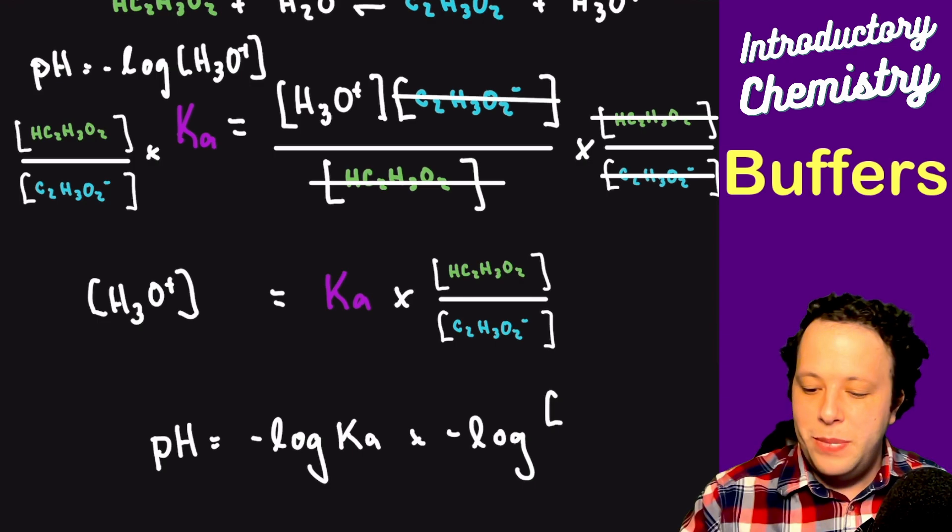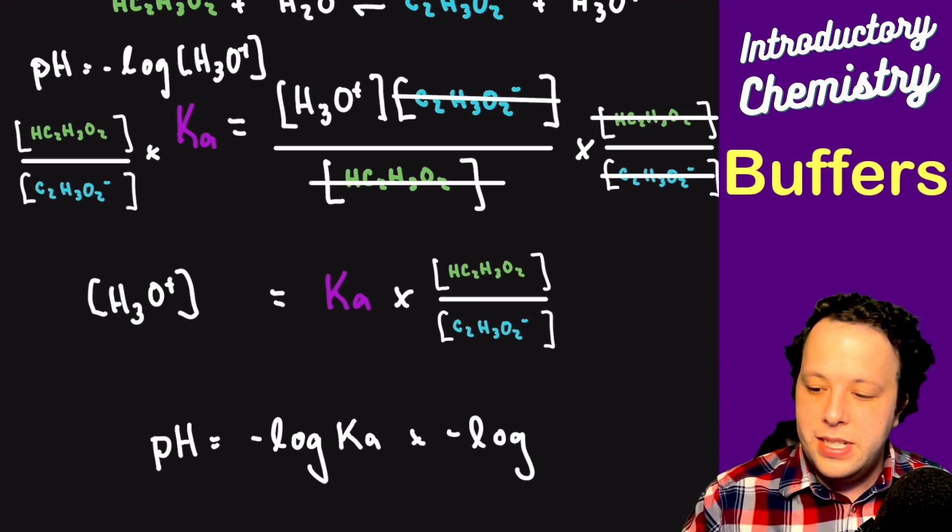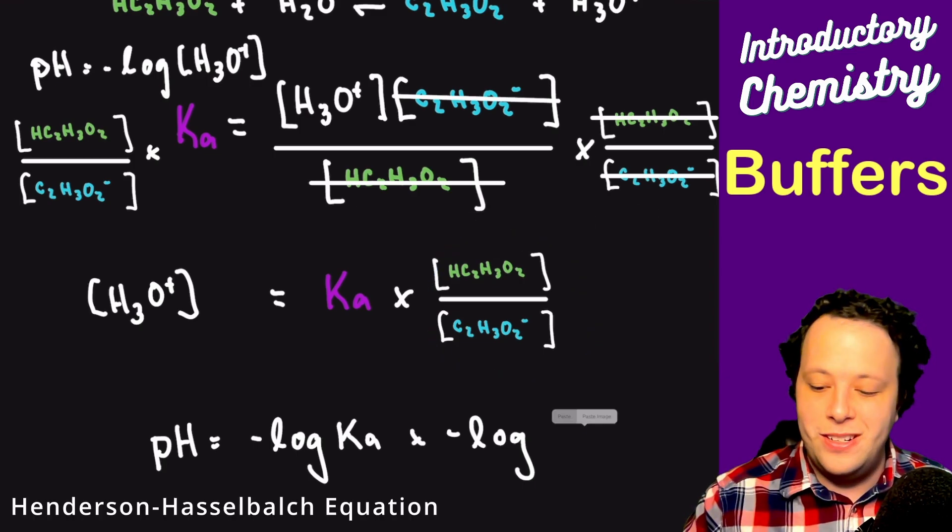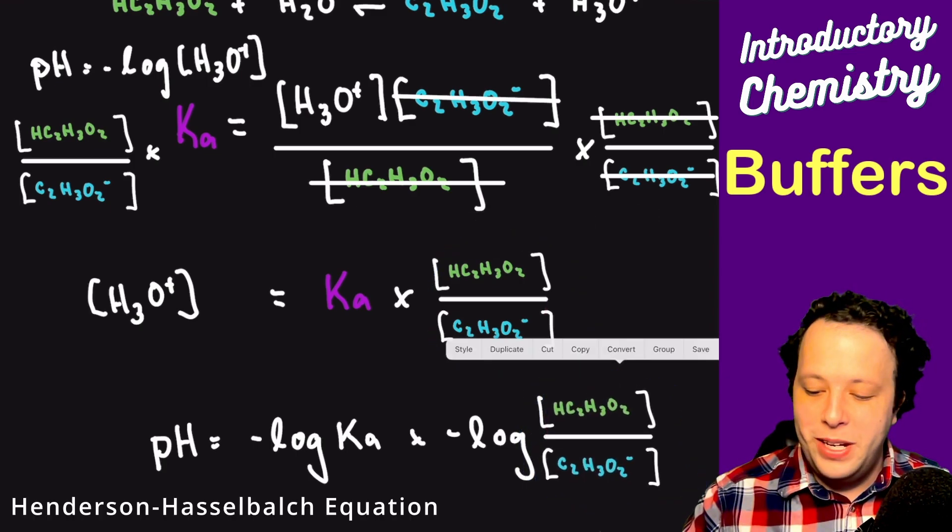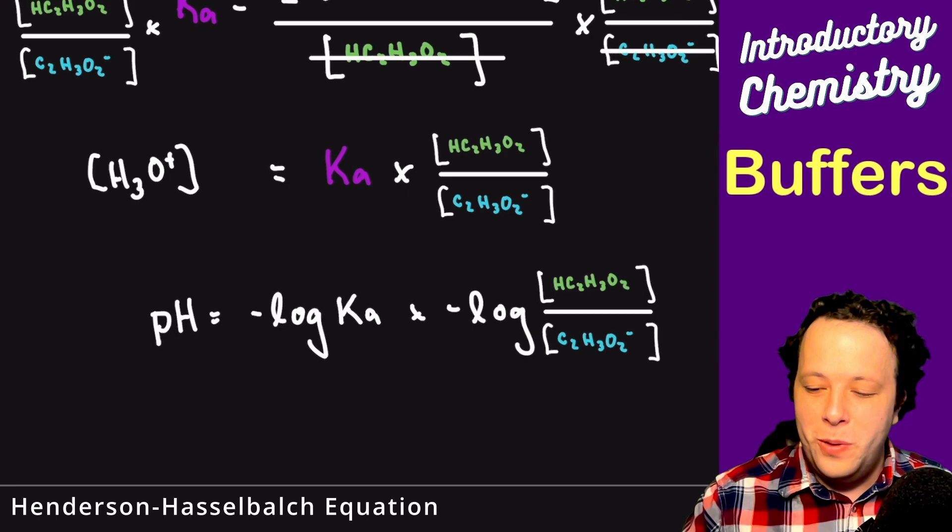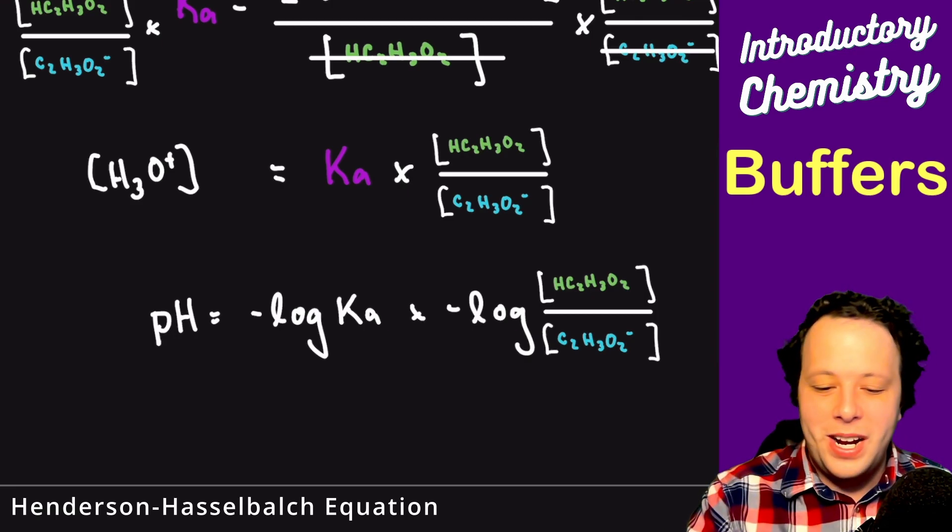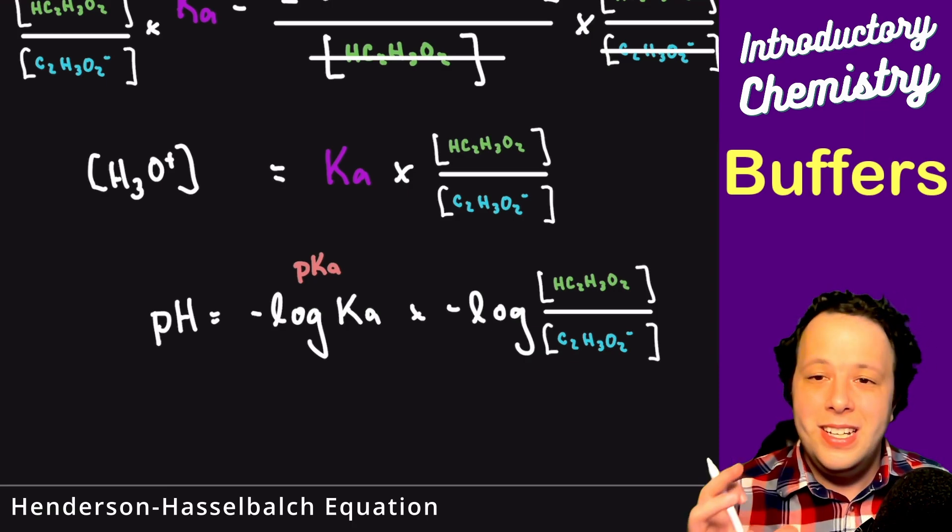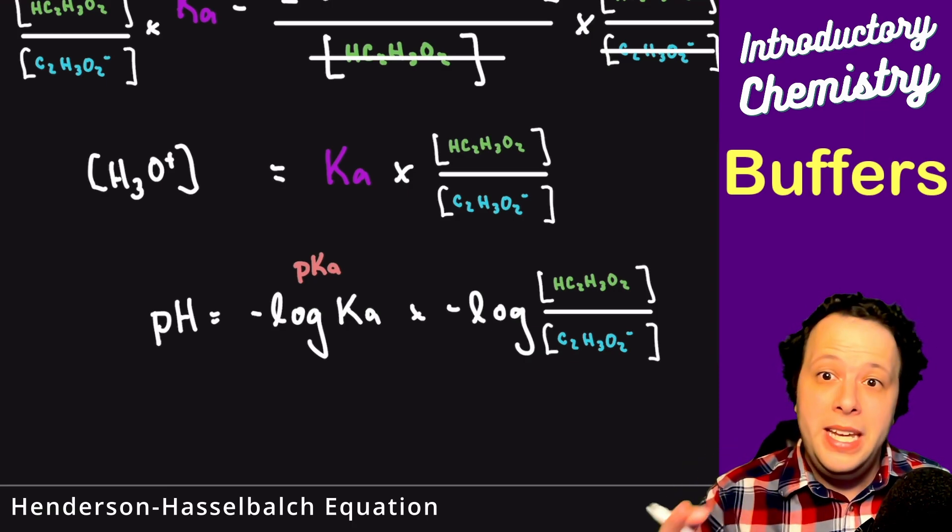So why is this so important? This is essentially how we define the Henderson-Hasselbalch equation, which is quite the complicated name. By deriving this, this Ka with a negative log is actually known as the pKa.